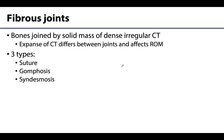Fibrous joints are within the structural classification of joints where bones are connected by a solid sheet of connective tissue. Say this is a bone and this is a bone — there will be a completely solid sheet, or as close to solid as possible, of connective tissue connecting the bones. It does not have that space in between like you'll have in a synovial joint.